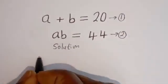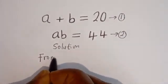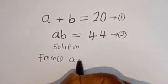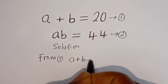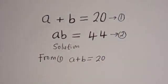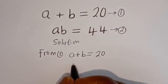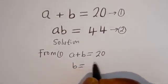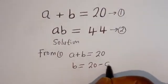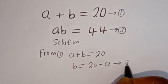From equation one, a plus b equals 20. Let's make b the subject of the formula: b is equal to 20 minus a. Let's call this equation three.